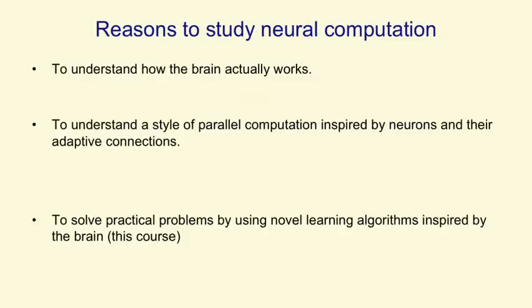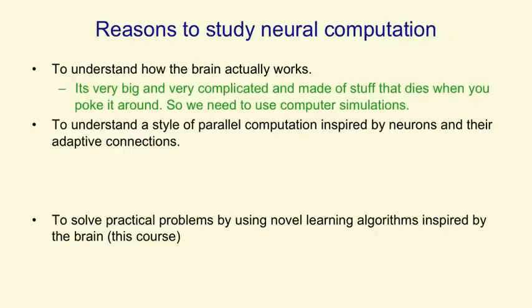There are several different reasons to study how networks of neurons can compute things. The first is to understand how the brain actually works. You might think we could do that just by experiments on the brain, but it's very big and complicated, and it dies when you poke it around, and so we need to use computer simulations to help us understand what we're discovering in empirical studies.